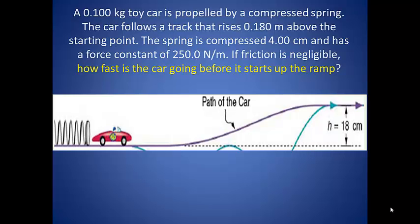As an example, a 0.1 kilogram toy car is propelled by a compressed spring. The car follows a track that rises 0.18 meters above the starting point. The spring is compressed 4 centimeters and has a force constant of 250 newtons per meter. If friction is negligible, how fast is the car going before it starts up the ramp?